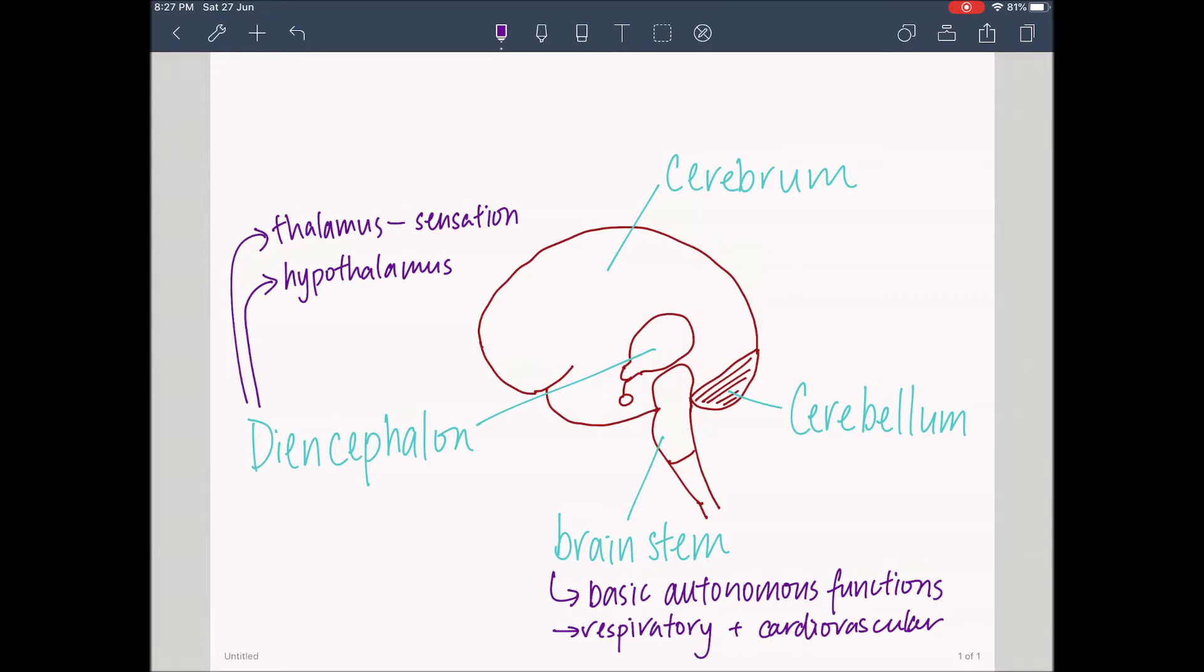It also contains the hypothalamus, which controls the autonomic nervous system, the ANS, which includes heart rate, blood pressure, body temperature, appetite, thirst, and the circadian rhythms. The diencephalon also contains the pituitary gland, which secretes hormones.